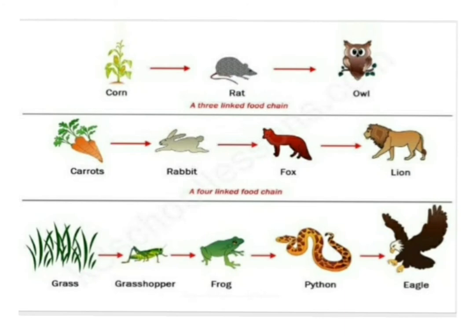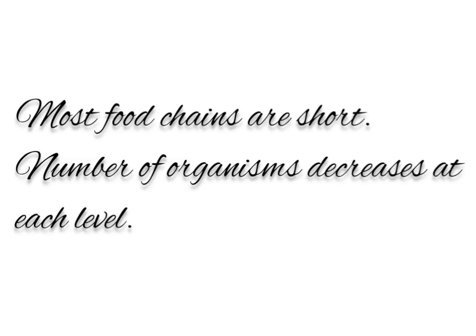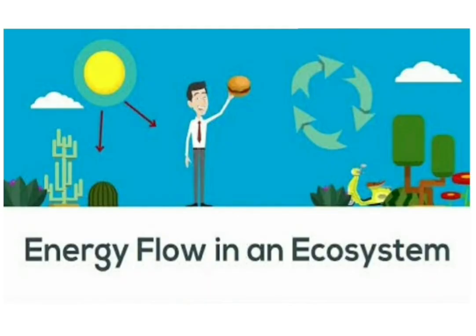Some facts to note about food chains: most food chains are quite short, meaning there are not more than four steps. Another fact is that the number of organisms decreases at each level. To understand these facts we must understand energy flow in the ecosystem.